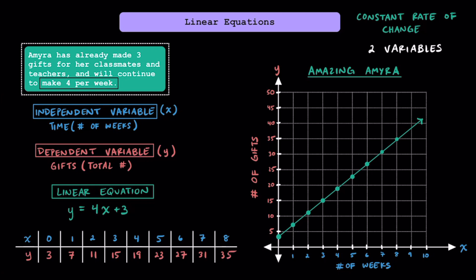As long as she keeps making the same amount each week, we can classify this as a linear relationship. When I say linear, I'm referring to this word here, which means when we graph this, we're going to be getting a straight line on our coordinate plane.